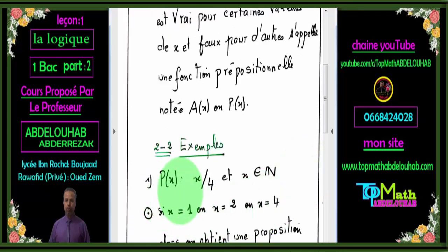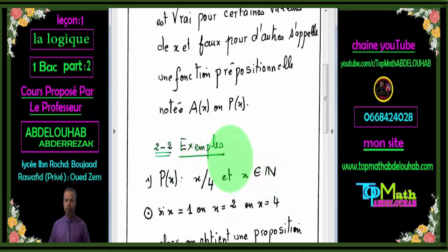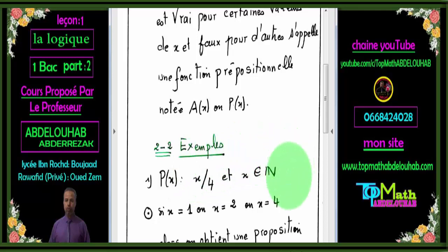Exemple : si on considère l'énoncé mathématique « x divise 4 », avec x appartenant à ℕ — la notation '/' représente la relation divise — personne ne peut confirmer si cet énoncé est vrai ou faux, parce qu'il y a une variable x qui varie dans ℕ. Donc cet énoncé peut être vrai pour certaines valeurs, et faux pour d'autres.